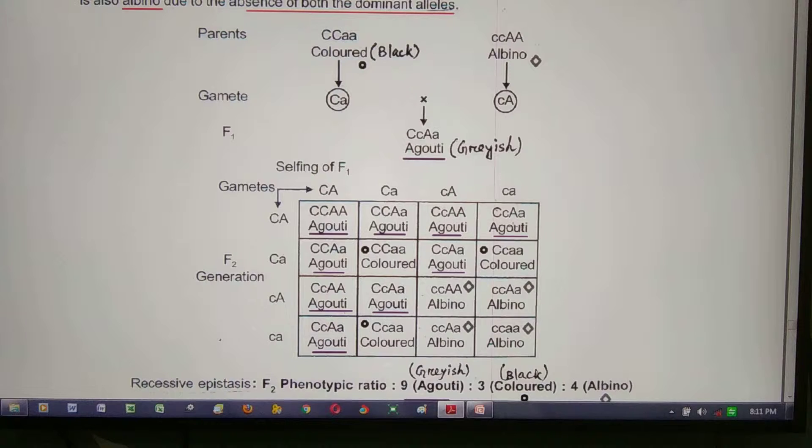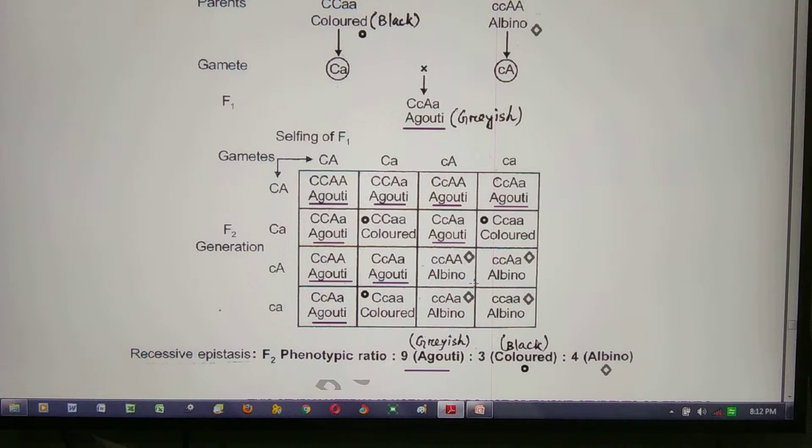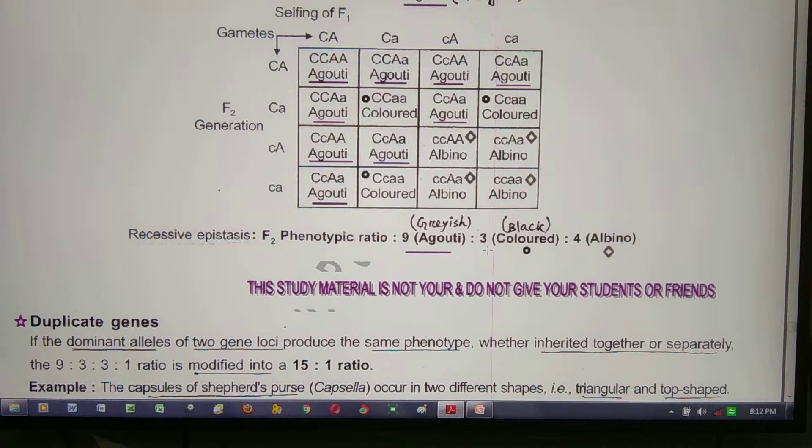In the second cross, not aabb, absent due to this C allele. The same ratio applies: 9 is to 3 is to 4.